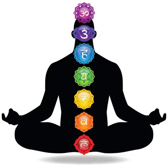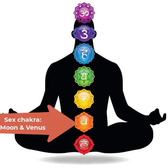The Swadhisthana chakra — the sex chakra — is influenced by the Moon and Venus. For example, if the Moon is bad in a chart, debilitated or sitting in the wrong house, then we will have sadness. Venus is for the pleasures of life; if Venus is not good, then we will have sexual problems and the pleasures of life will not be available to you. So the Swadhisthana chakra is influenced by Venus and the Moon.